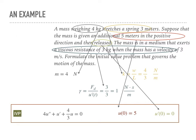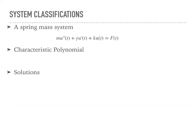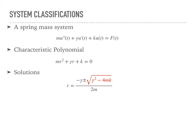Once you have the IVP, you know how to solve for the equation. Now let's talk about the different types of spring-mass systems. Since all coefficients are constants, you can find the characteristic polynomial of the homogeneous part and solve for r to classify the system.